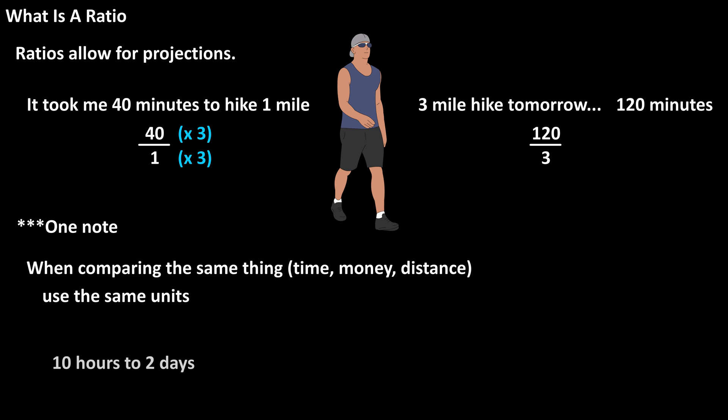As an example, if I said 10 hours to 2 days, we would not write this ratio as 10 to 2, because we're comparing the same thing, time, in different units. So we would convert 2 days to hours, which is 48 hours, and we would have a ratio of 10 to 48, which can be reduced to 5 to 24.